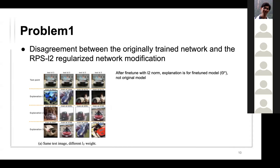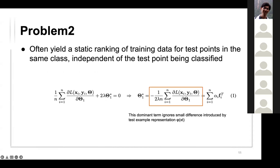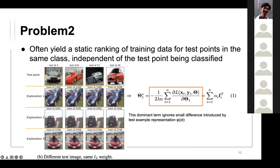There are two problems with the background method. Problem one: there is a disagreement between the original trained network and the RPS L2-regularized fine-tuned network — the explanation is based on the new theta-star, not the original model, and different L2 norm parameters give different explanations. Problem two: this method often gives a static ranking of training data for test points in the same class, independent of the actual test point, because the dominant term ignores differences introduced by the test examples.